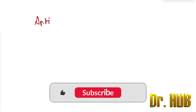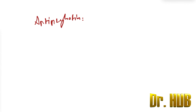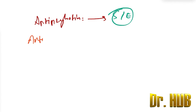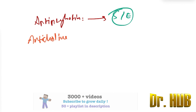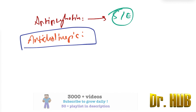Today we look at the antipsychotics and specifically their potential side effects. Starting with anti-cholinergic effects, the highest potential for anti-cholinergic side effects is seen with chlorpromazine.